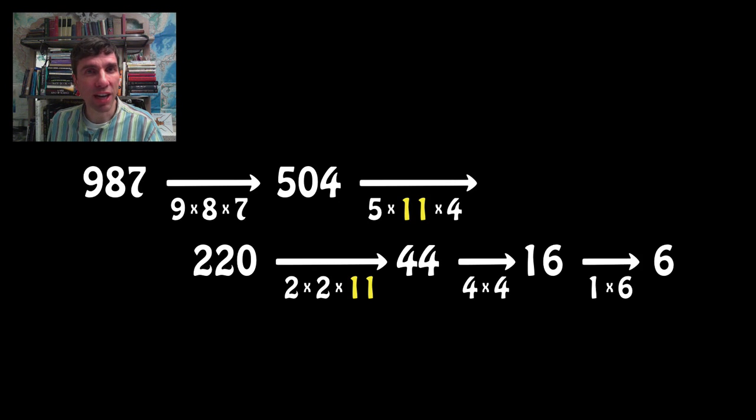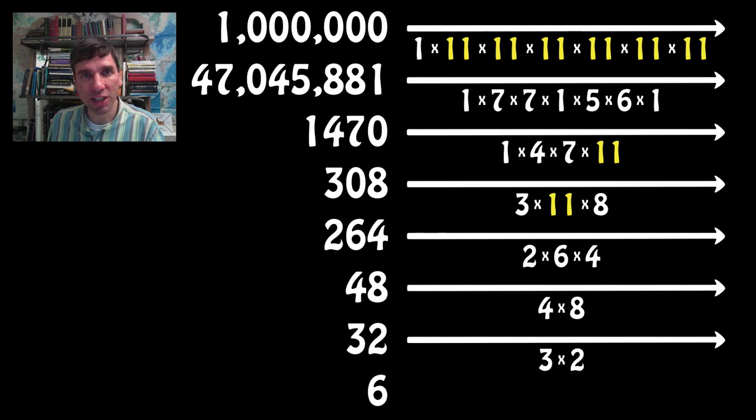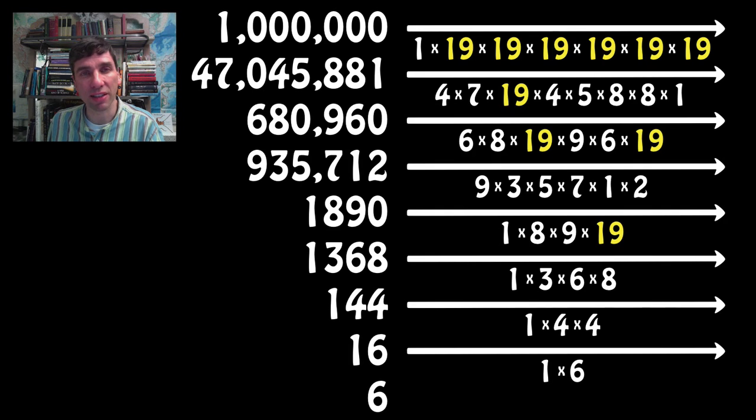A million crashes to zero immediately. But if we substitute 11 for the zeros, then we end up crashing to a single digit 6. And it takes a while to do that. If we choose a number larger than 11, let's say 19, then that took even longer to crash to a single digit.